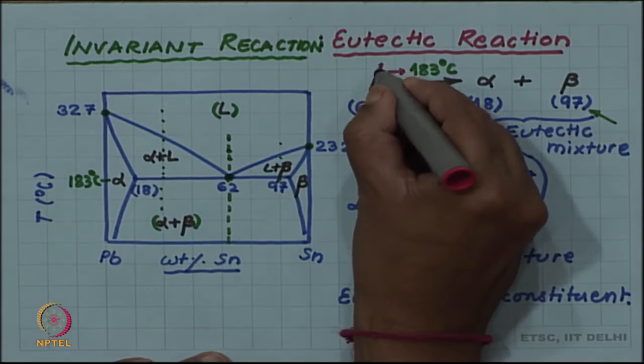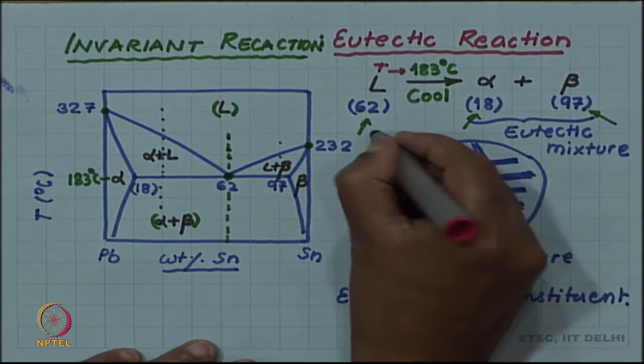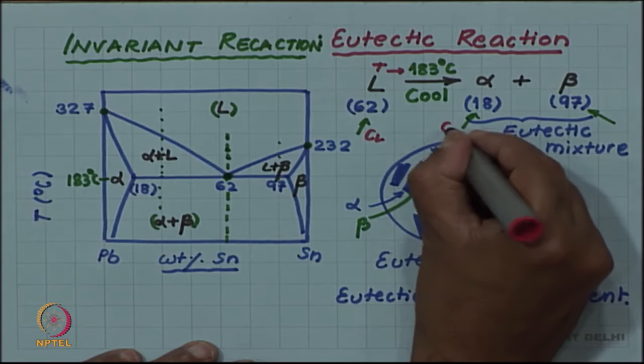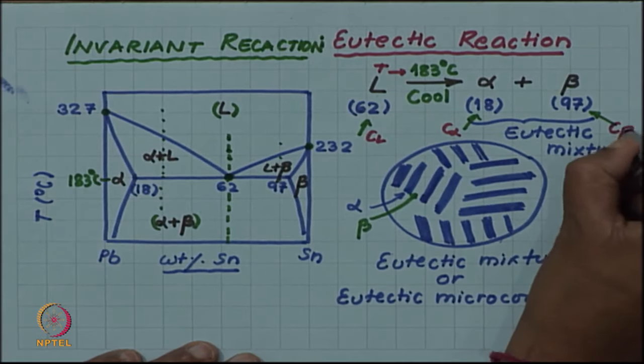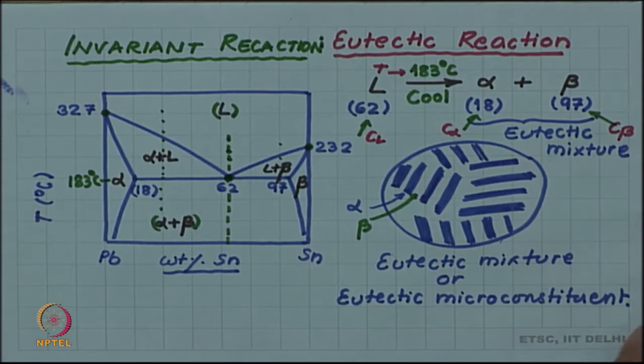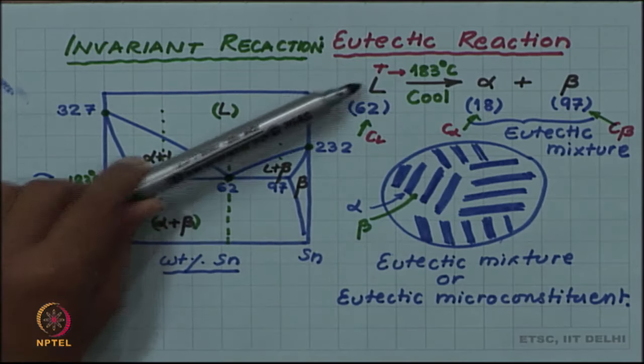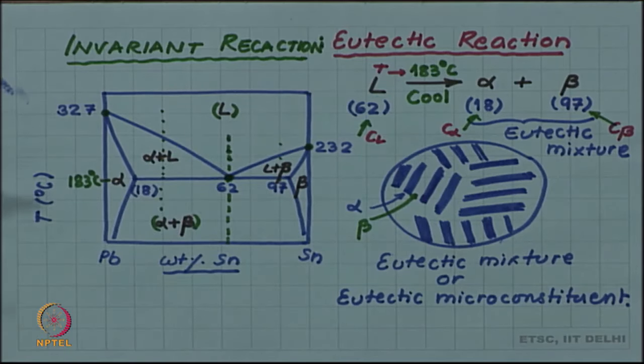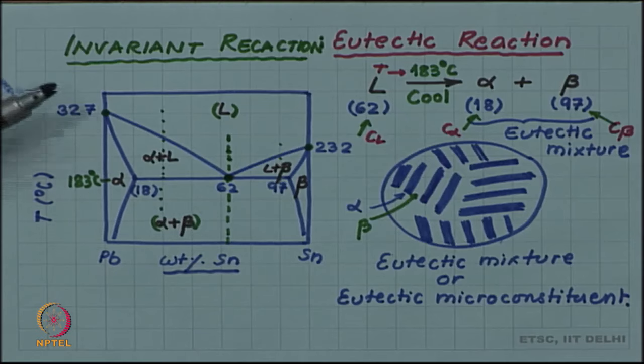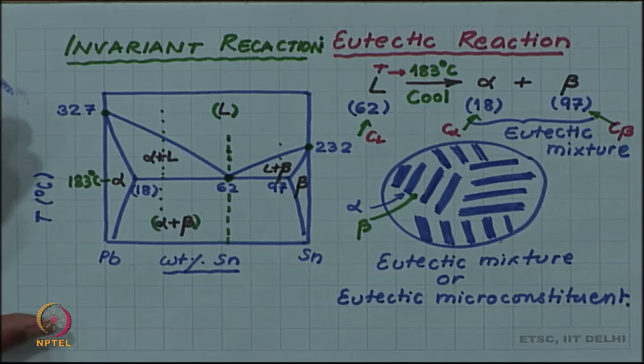Neither the temperature nor the composition of the liquid phase, the alpha phase, or the beta phase is a variable when this reaction happens. Since all these three compositions and the temperature is fixed during the invariant reaction, during the eutectic reaction, we call such reaction an invariant reaction. And eutectic reaction is one example of such reaction. We will have opportunity to look at some other invariant reactions, several other invariant reactions during this course.